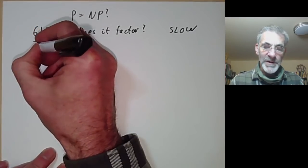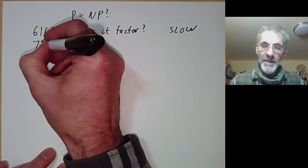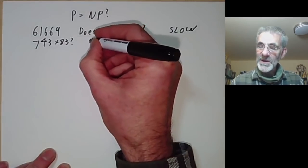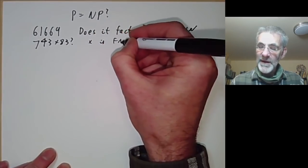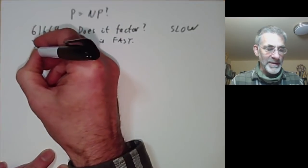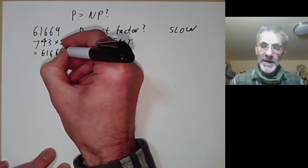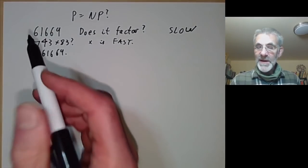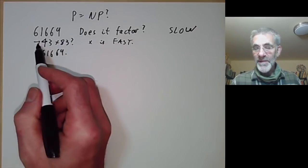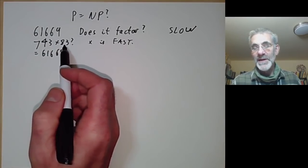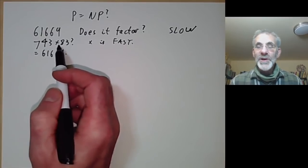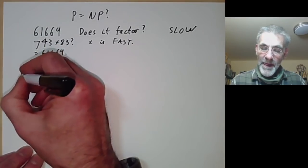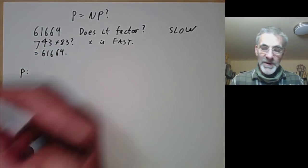On the other hand, if I ask a different question — what is 743 times 83 — and you had to do it by pencil and paper, that would be easy because multiplication is fast. And you would find the answer is 61669, which is the number we first asked about. So what we see is that it's pretty difficult to find this factorisation 743 times 83, but once you've found it, it's very easy to check that it is a factorisation. And now P stands for algorithms that are fast, roughly speaking.